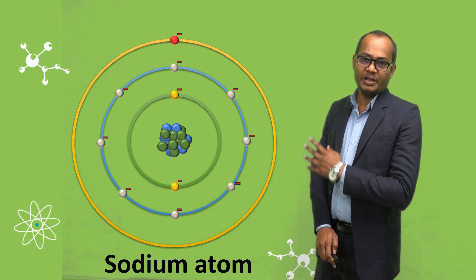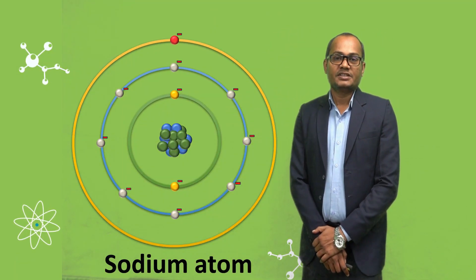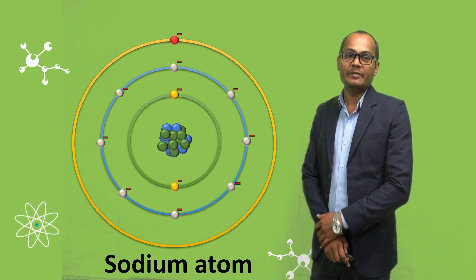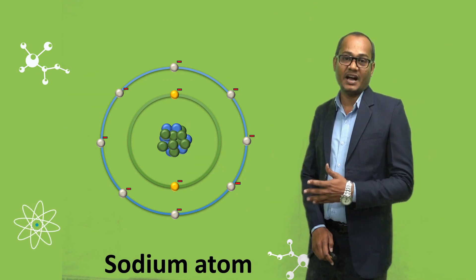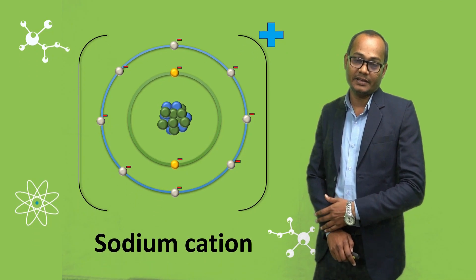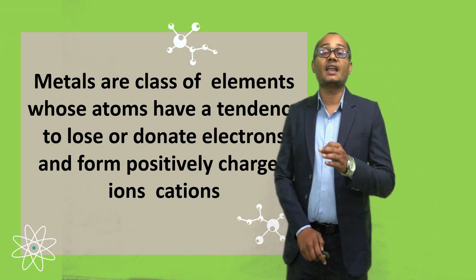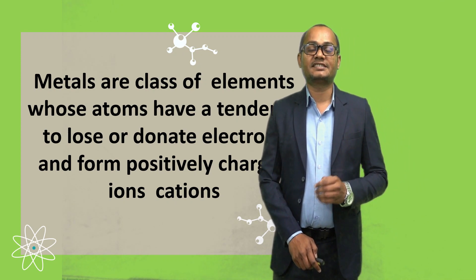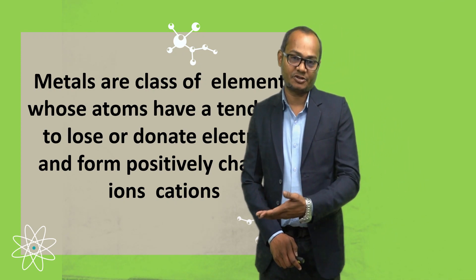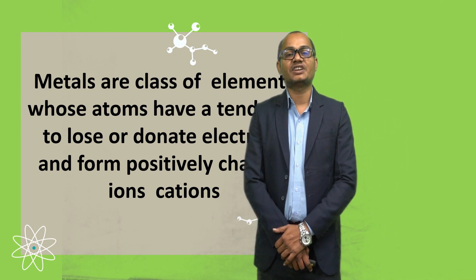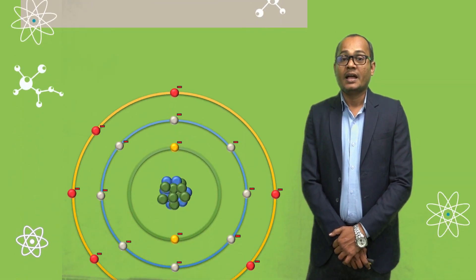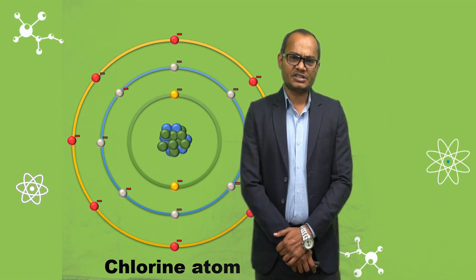Now if you look at this sodium atom, the sodium atom has a tendency to lose electrons and become a positively charged ion, that is a cation. So what are metals? Metals are nothing but a class of elements whose atoms have a tendency to lose electrons and form positively charged cations.